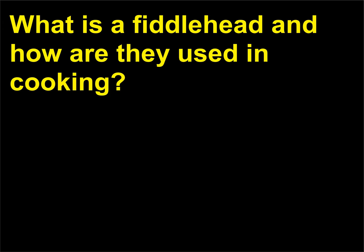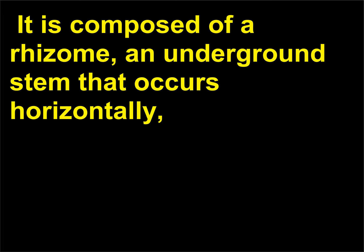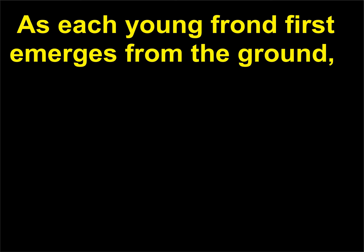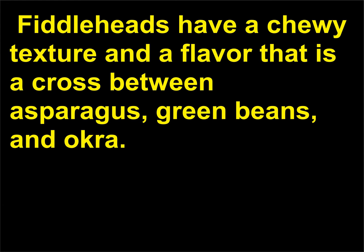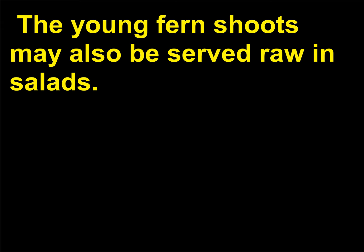What is a fiddlehead and how are they used in cooking? A fern is composed of a rhizome, an underground stem that occurs horizontally, which produces roots and leaves called fronds. As each young frond first emerges from the ground, it is tightly coiled and resembles the top of a violin, hence the name fiddlehead. Fiddleheads have a chewy texture and a flavor that is a cross between asparagus, green beans, and okra. They may be cooked by steaming, simmering, or sautéing, and they are typically served as a side dish. The young fern shoots may also be served raw in salads.